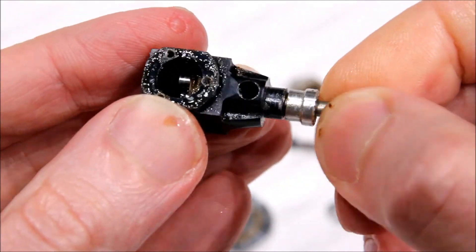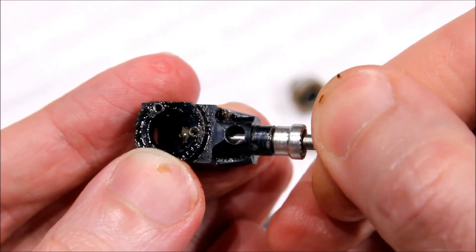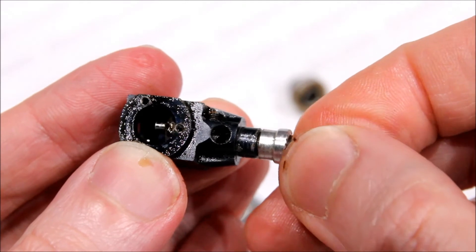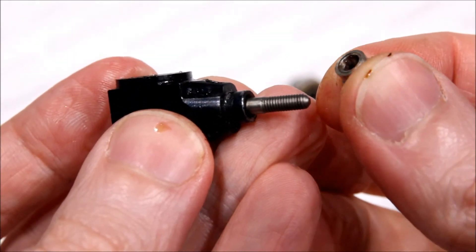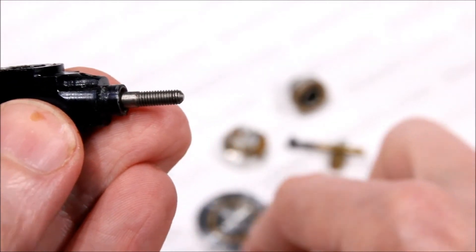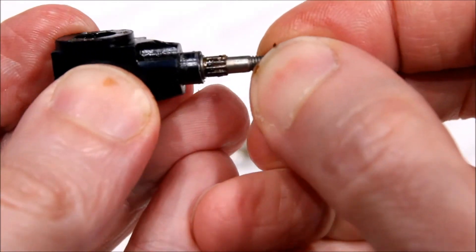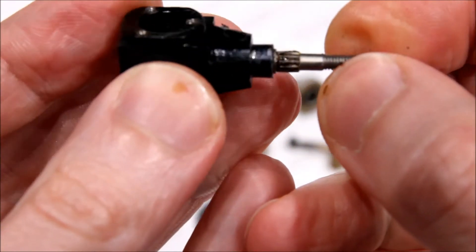You can see the intake passage in the crankcase here. The prop driver fits on a spline on the crankshaft.